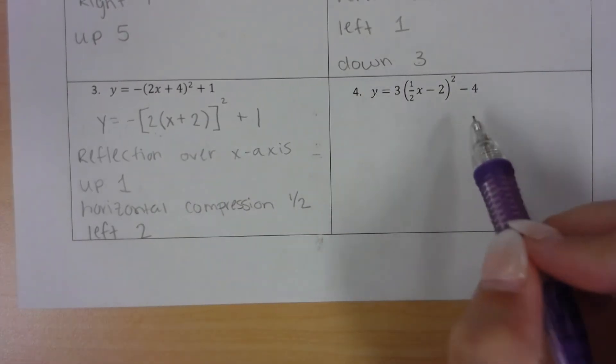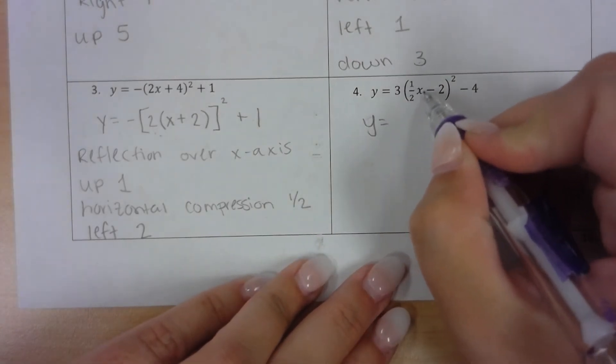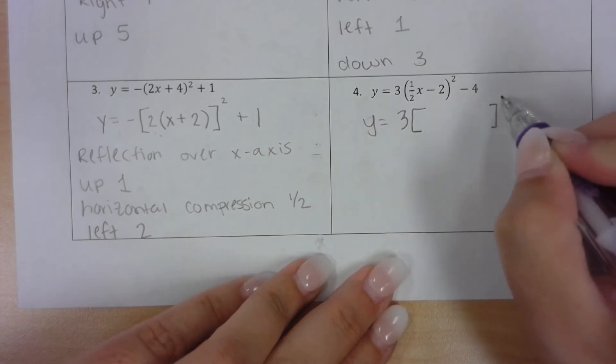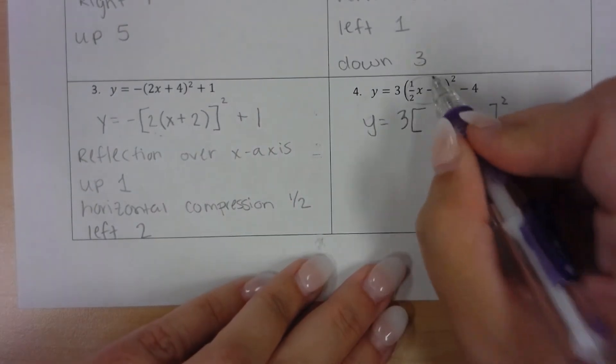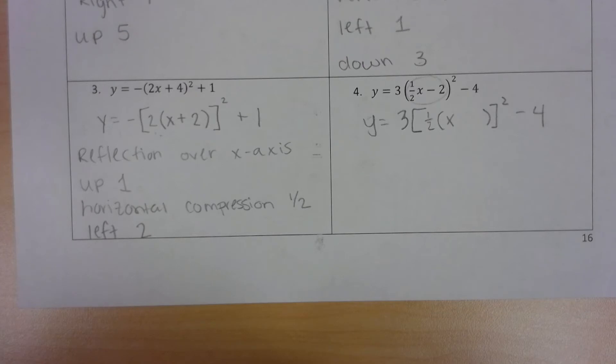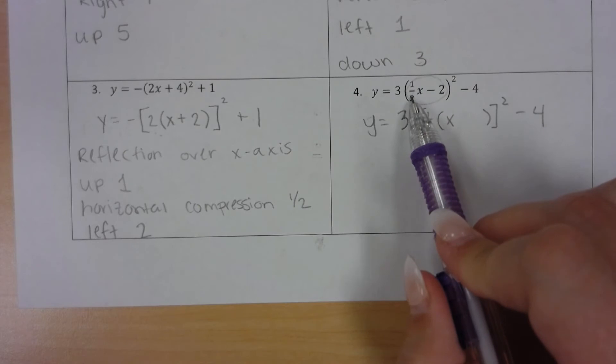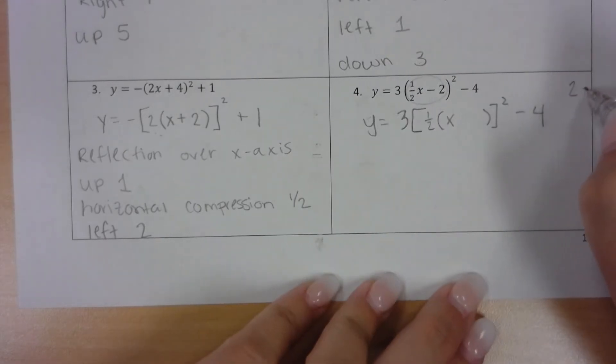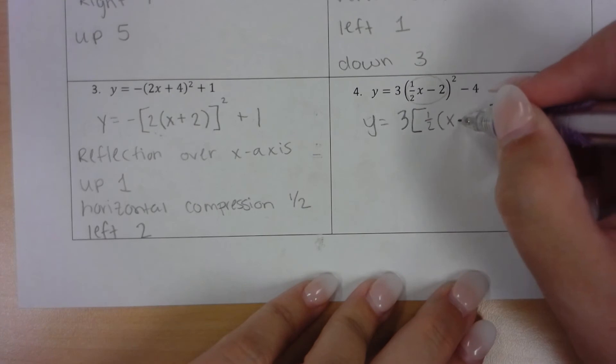Same thing is going to happen in this problem. Our first step is we need to get this 1 half away from the x. So we have 3. And then I'm going to change my parentheses into brackets. And then I'm going to factor this out. So I'm going to factor out the 1 half. So I'm going to take the x, the 1 half away from the x. And then I'm factoring out a 1 half. So I'm dividing by a half. So I'm taking that 2 and I'm dividing it by a half. Well remember when we divide fractions, we actually multiply by the reciprocal, which gives us 4.